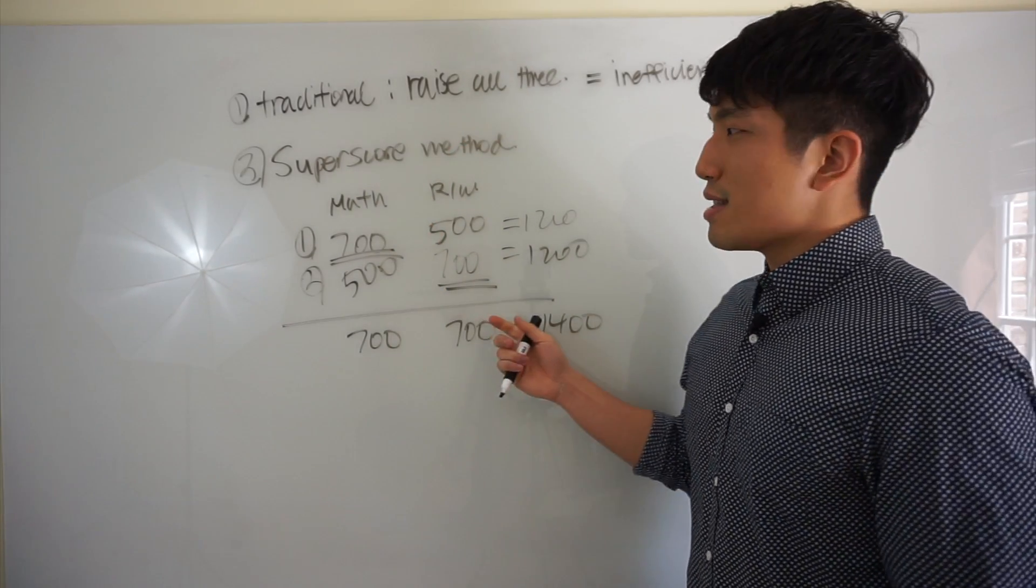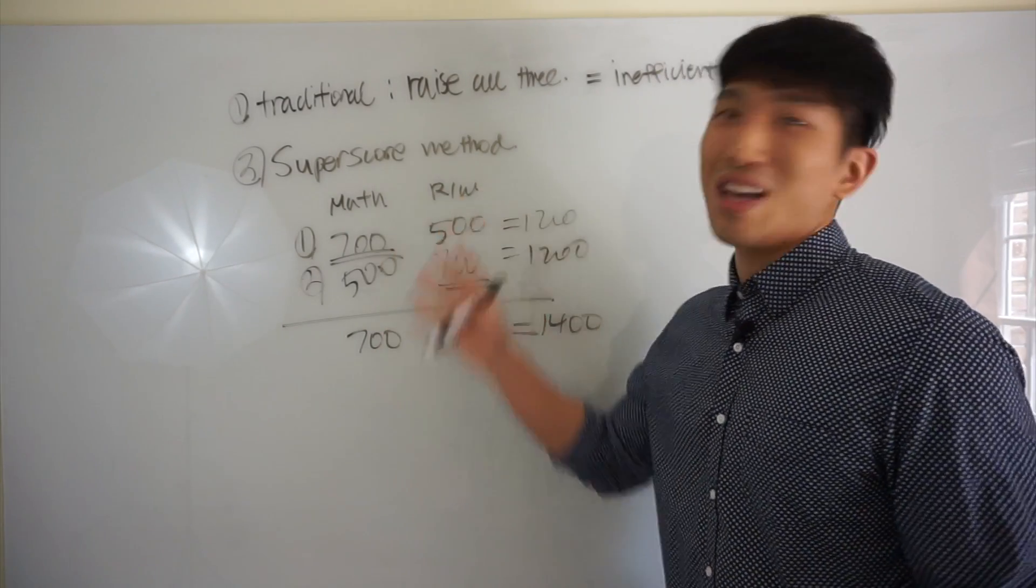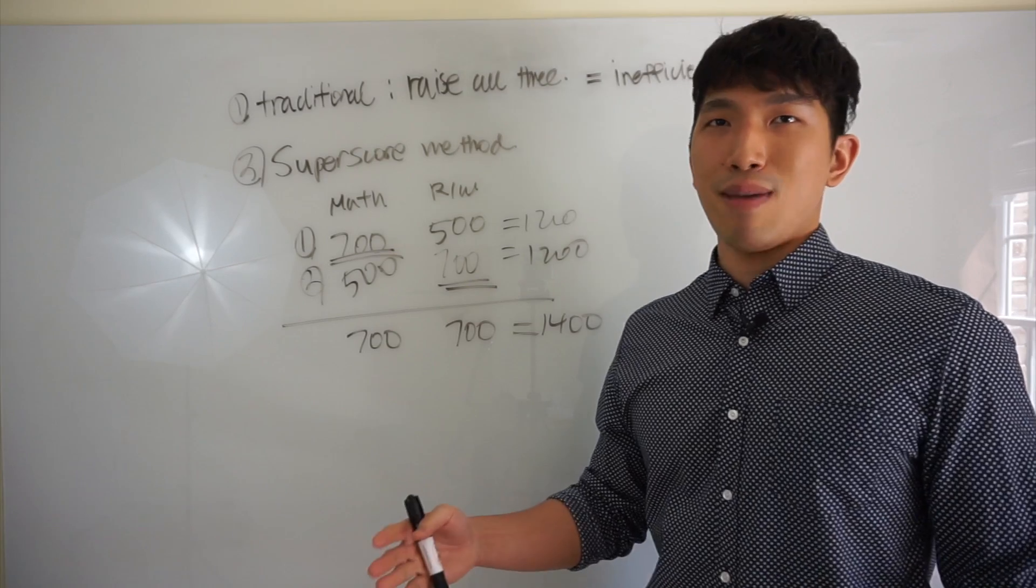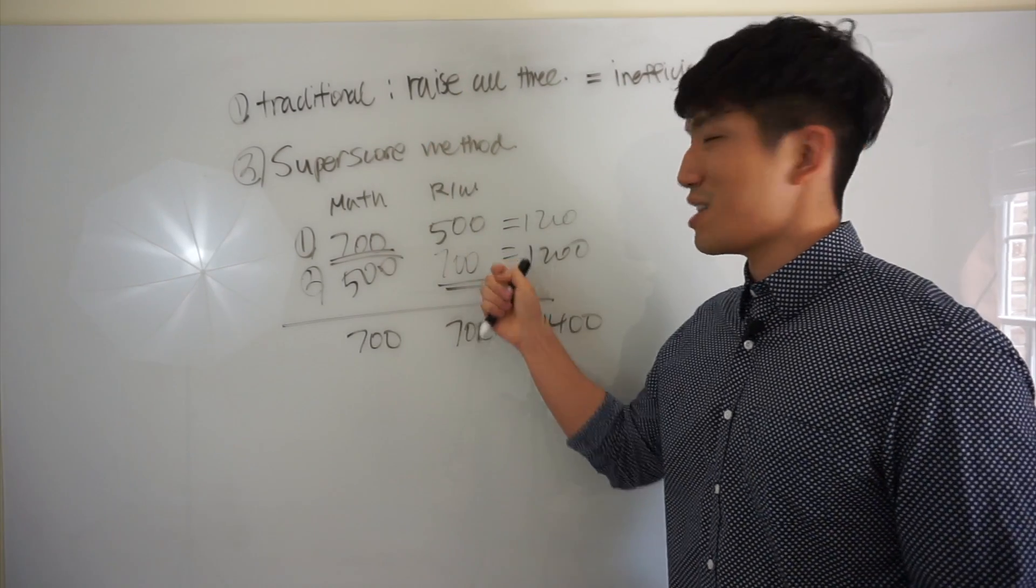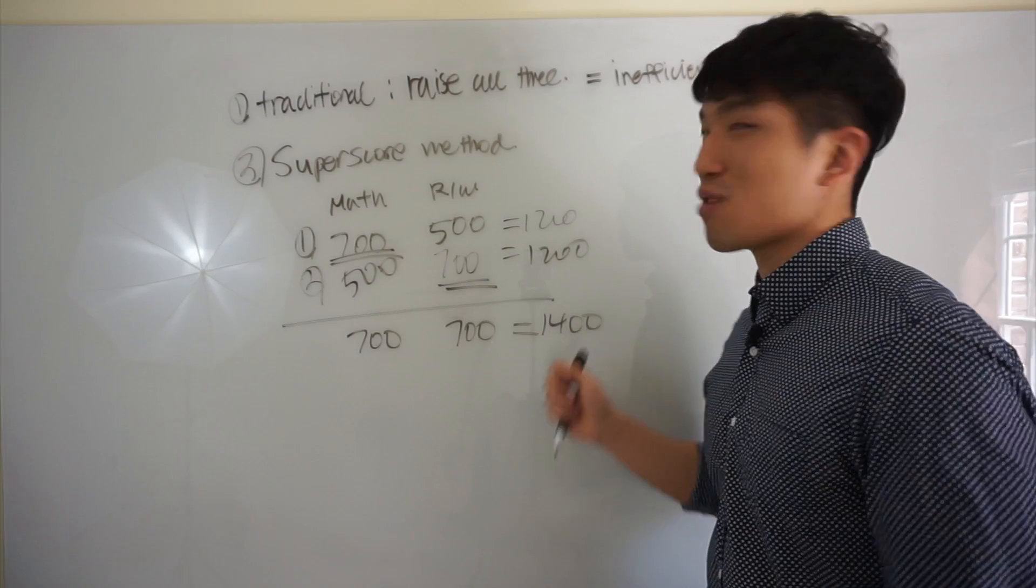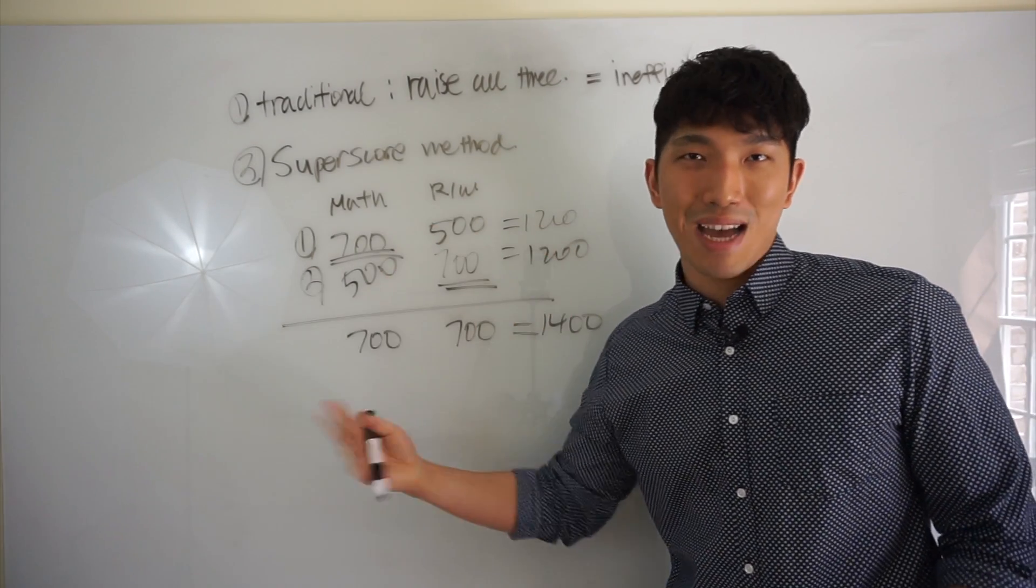But SuperScore tells us that they're going to look at the highest score from each of your sections. So this tells us that there's really no point of studying for two sections or three different things at the same time. Your best bet is to focus on just one thing, raise it up like that, and then focus on the other one, raise it like that, and have a super high score, instead of trying to study for both of them and try to raise it at the same time.